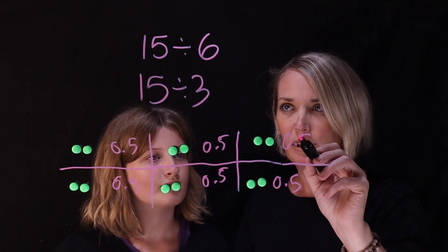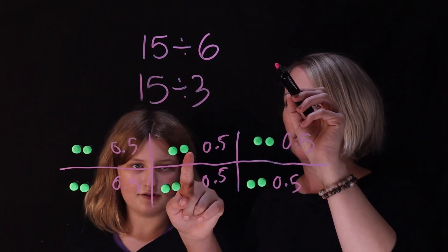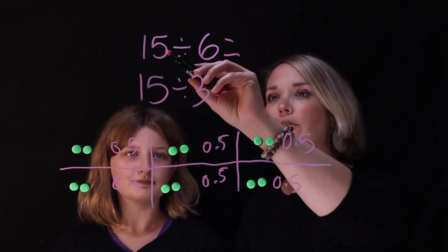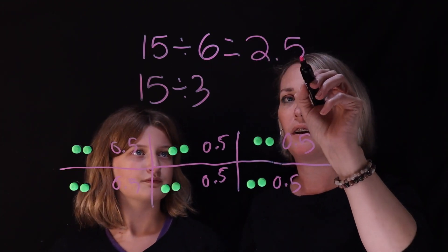So now you've split 15 into 6 equal groups. That's awesome. So the answer is 2.5. And there's 2.5 in each one. So 15 divided by 6 is 2.5.